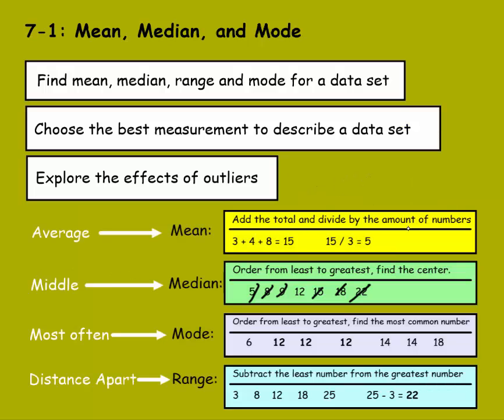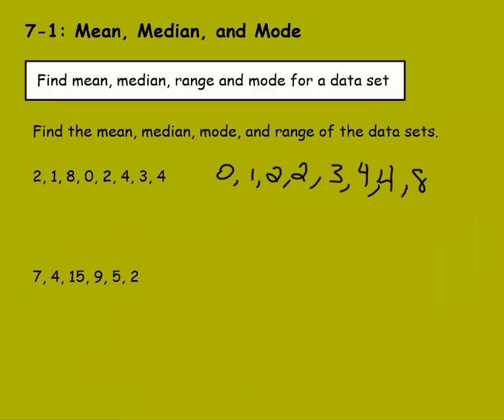To find the mean, remember we have to add the total and divide by the amount of numbers. So for the mean, we would say 0 plus 1, which is 1, plus 2 is 3, 5, 8, 12, 16, 24. So then 24 for our total value divided by the amount of numbers, which is 8, gives us a mean of 3. So our mean is 3.